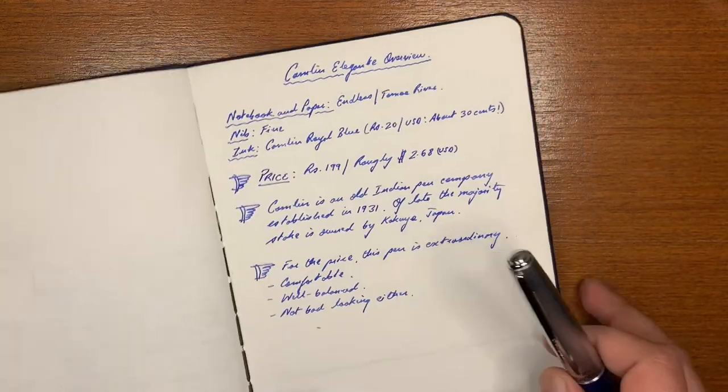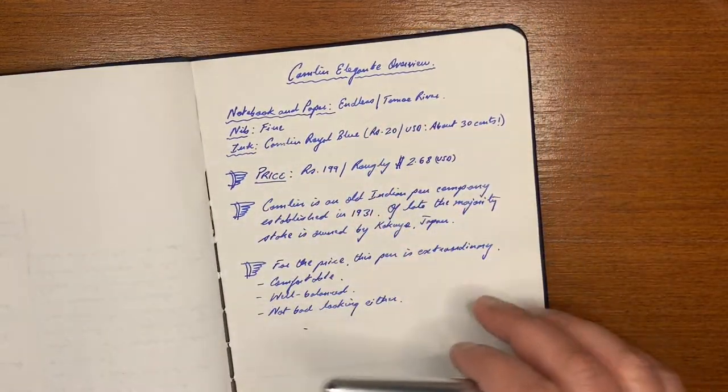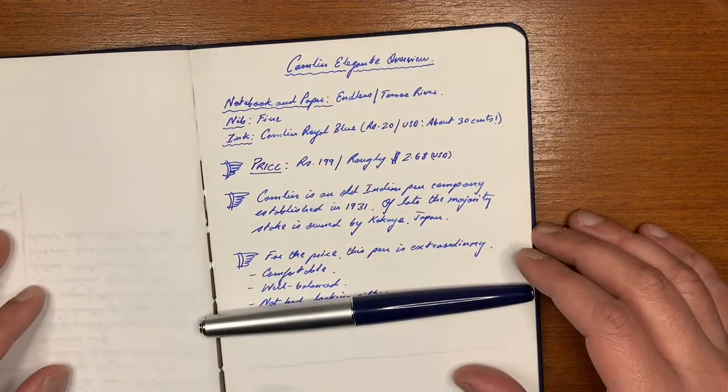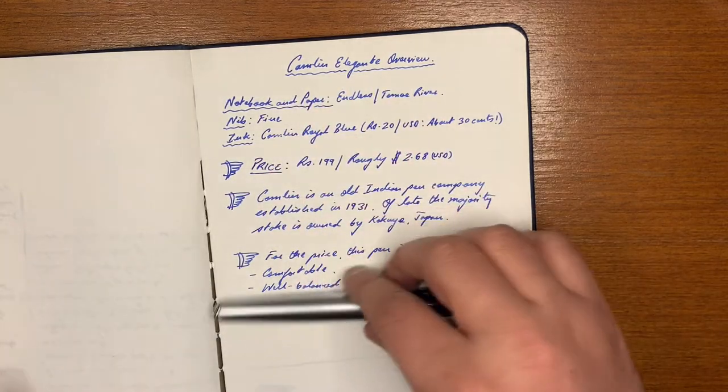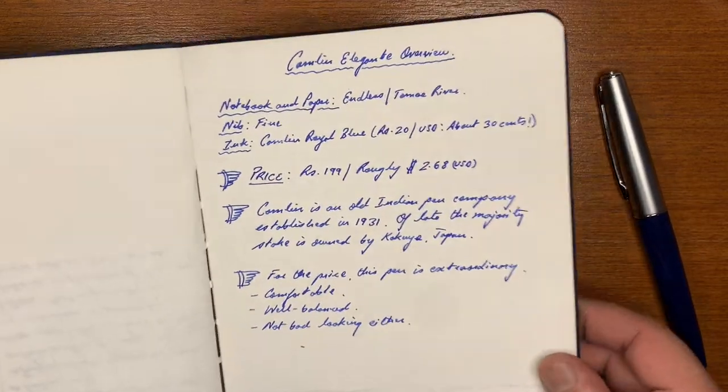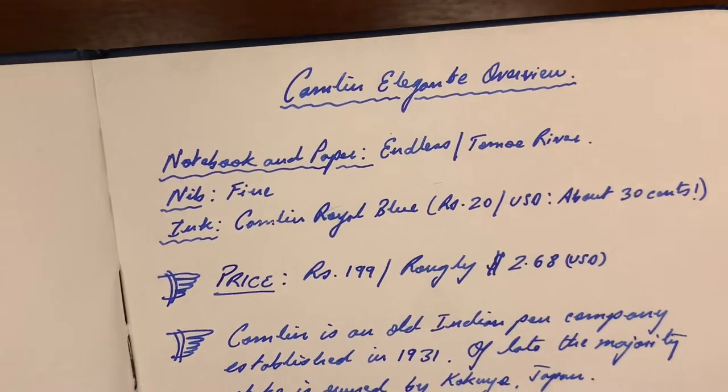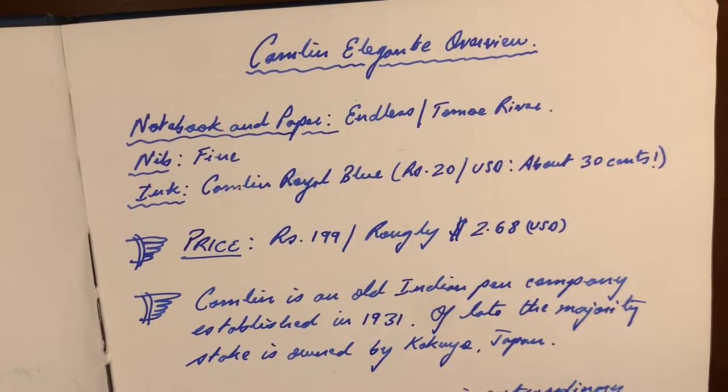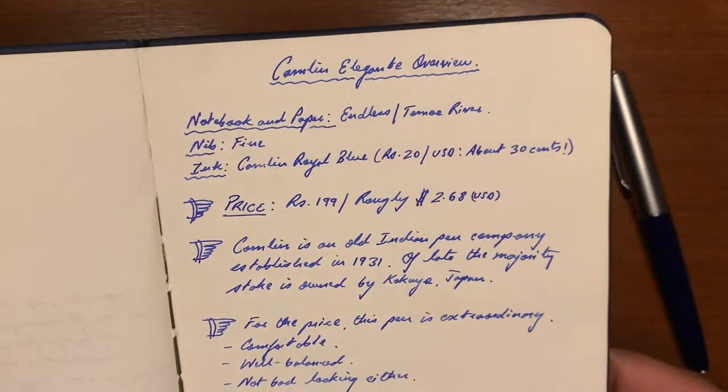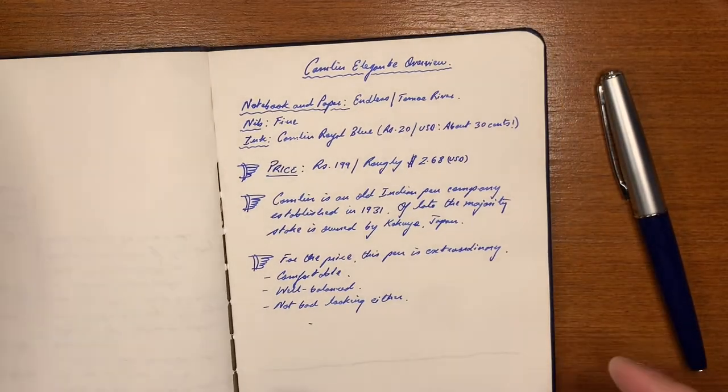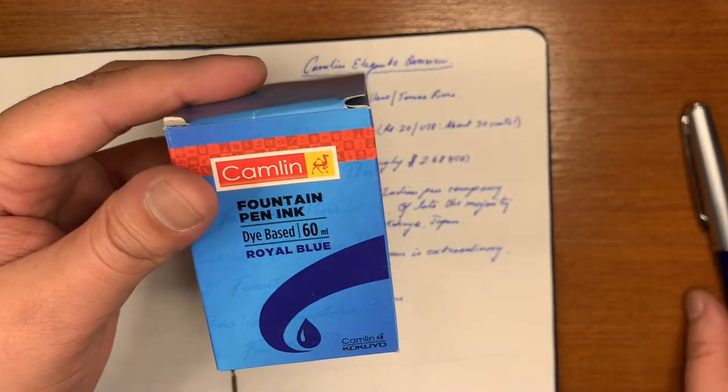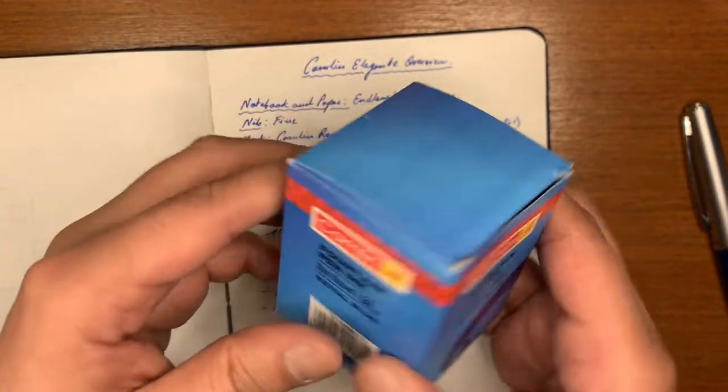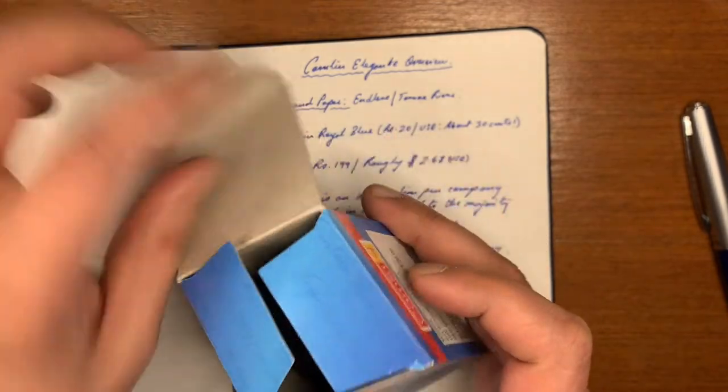Now this writing sample is on an endless notebook with Tomoe River and the nib is fine although if you ask me the nib seems a bit like a fine medium. But it doesn't matter. It writes quite well. The ink flow is excellent. The ink I'm using is called Camlin Royal Blue which is of the same company and it is an extraordinarily good ink.